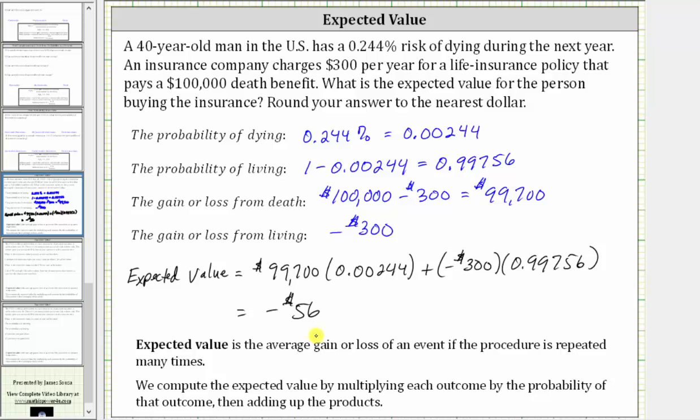On the opposite side though, this also indicates that the insurance company will gain an average of $56 each time they sell this life insurance policy to a 40-year-old man.